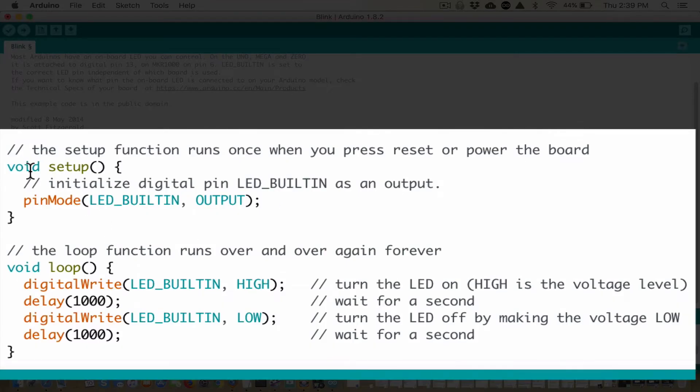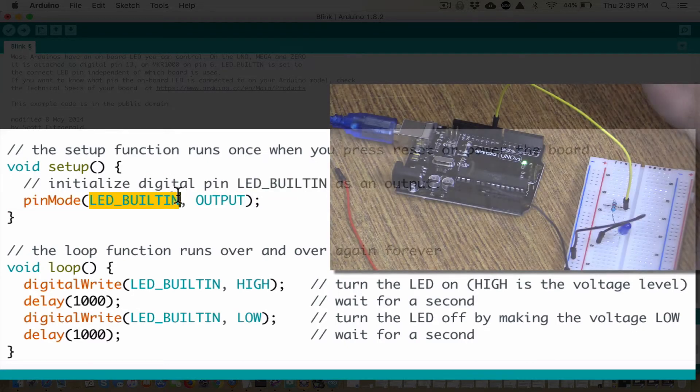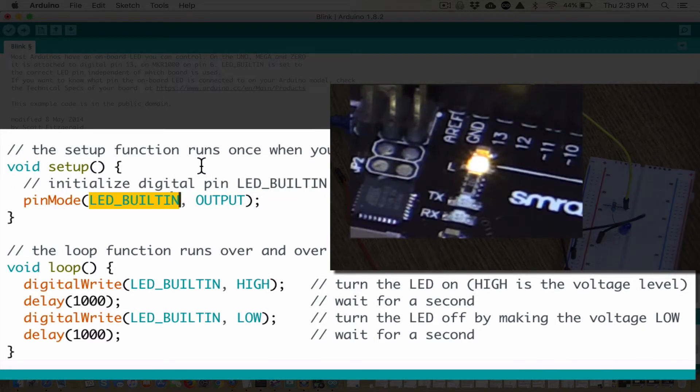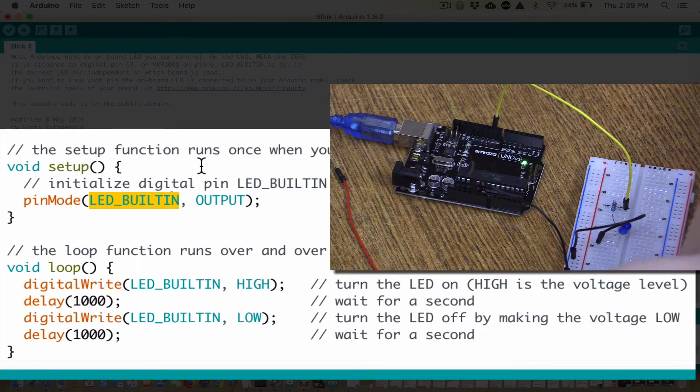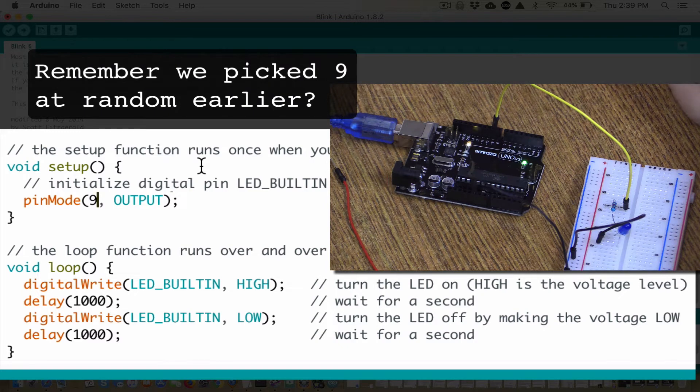Now you'll notice that here in void setup, which is where you set up your variables and we'll do more of that later on, it says pinMode LED_BUILTIN. On the Arduino, LED_BUILTIN is number 13. It's the one that makes the light blink on the Arduino. But we know that we want number 9 to be the output.